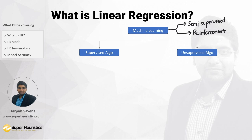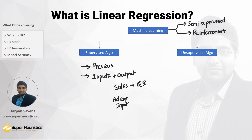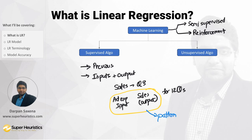Supervised algorithms are when you share with the algorithm previous data that includes not just the inputs but also the outputs. For example, if I want to know how much sales I'll make in quarter three, I share the ad expenditures as input and sales as output for the last 12 quarters. The algorithm finds a pattern from this data so it can predict sales when I give it a new ad expenditure value, say 50 crores.